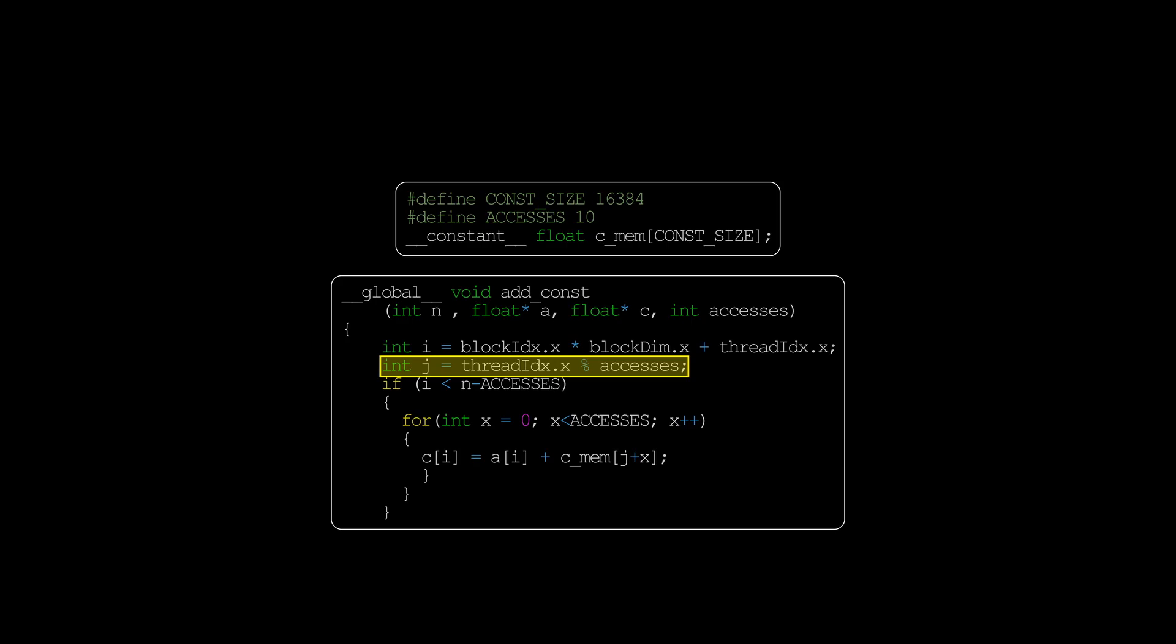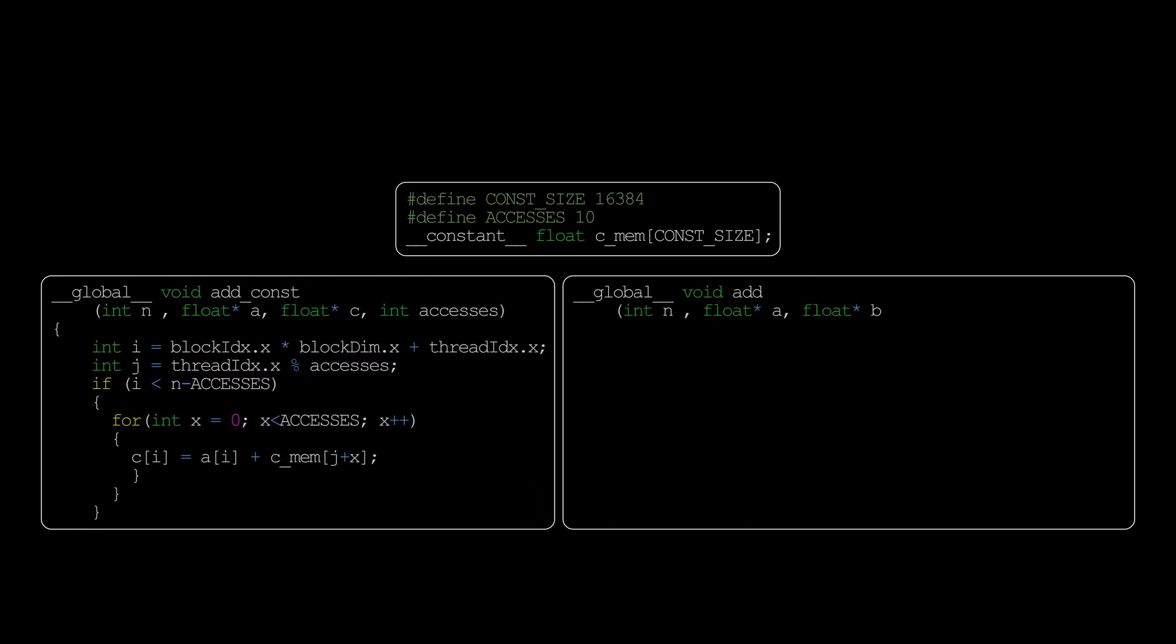We are also passing in as a parameter the number of accesses per warp. So when it's 1, all threads in a warp use the same memory. If it's 2, half the threads access the same memory, etc. And we are going to do the same thing in another kernel, but this time the second vector is also in global memory.